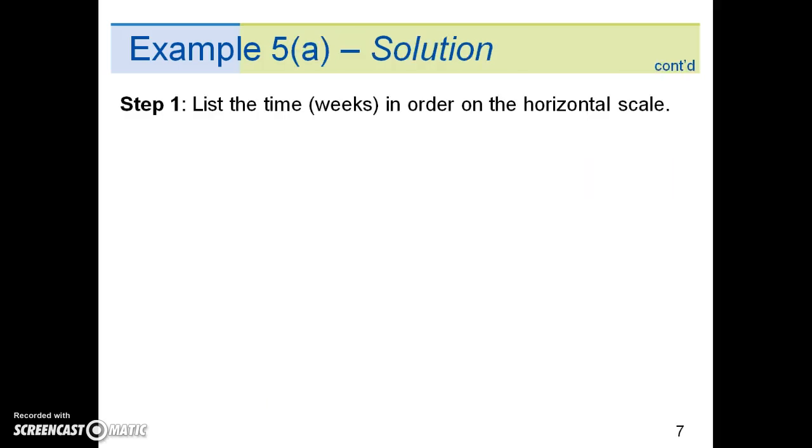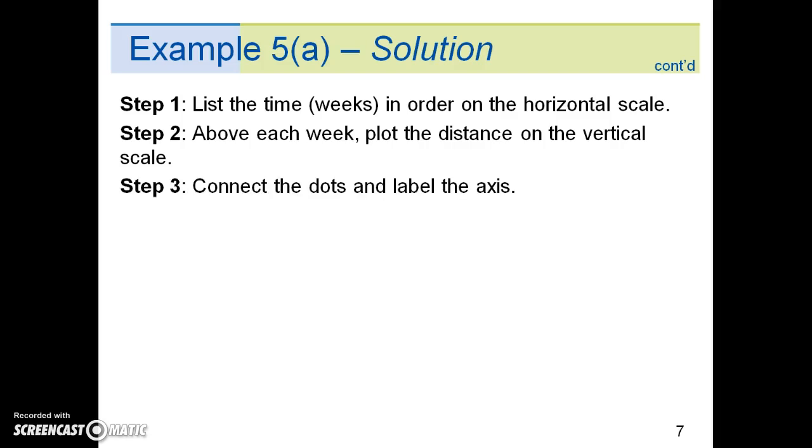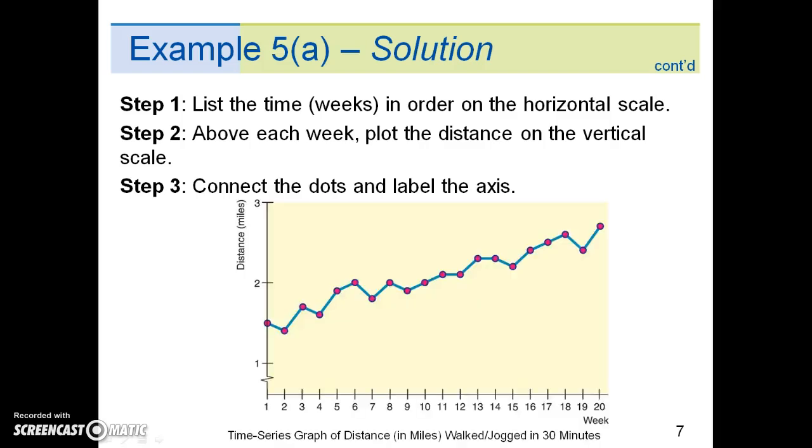There are three steps to making a time series graph. Step one is to list the time or weeks in order on the horizontal scale. In step two, above each week, we plot the distance on the vertical scale. In step three, we connect the dots and label the axis. And here is the finalized graph.